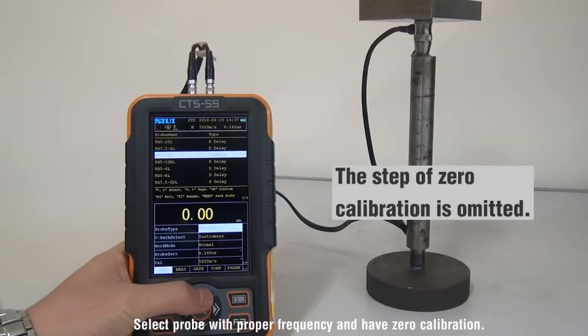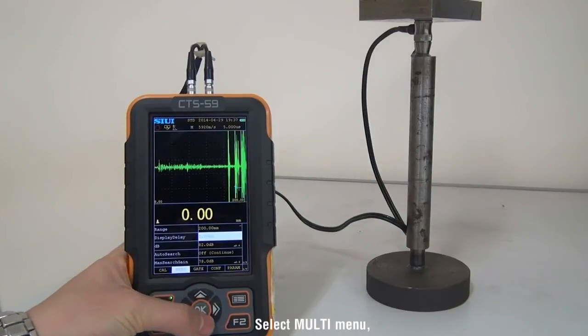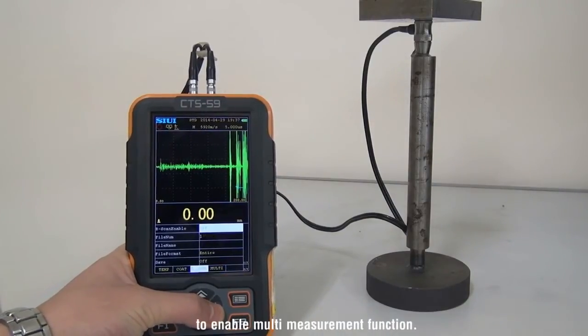Select probe with proper frequency and have zero calibration. Select Multi-Menu, adjust Multi-Measurement Enable to On to enable Multi-Measurement function.